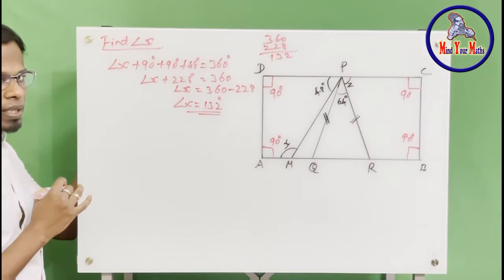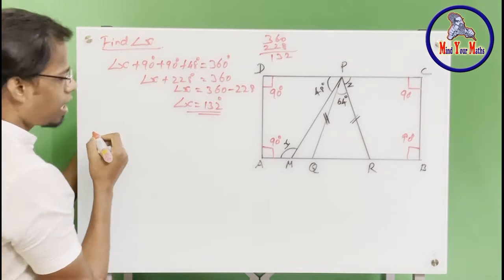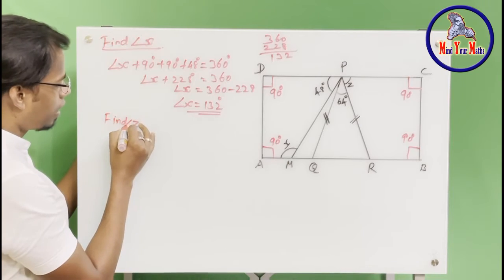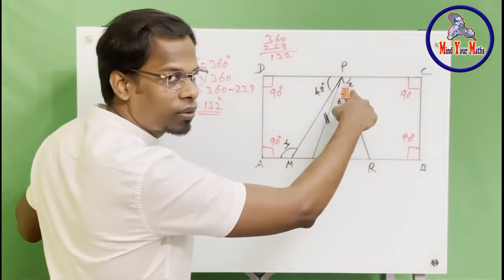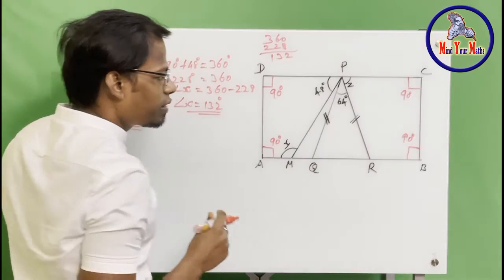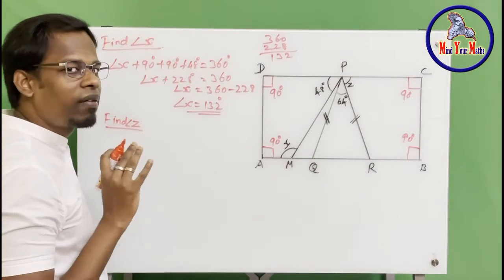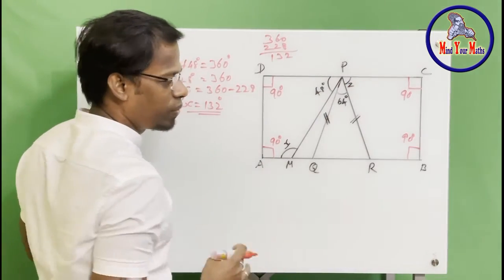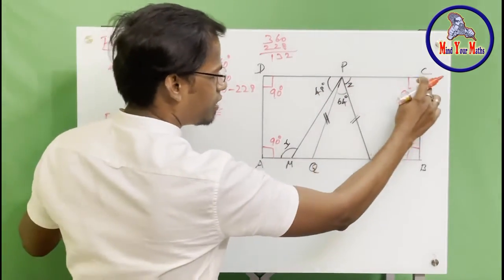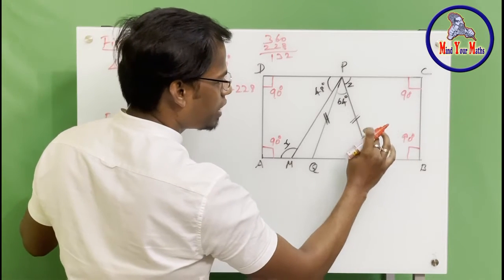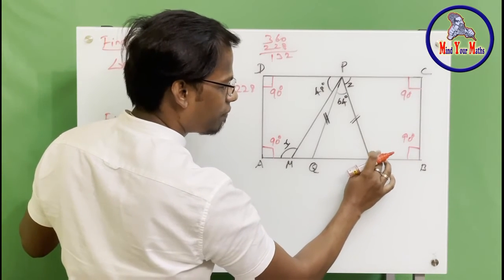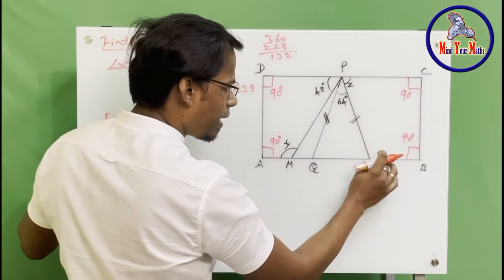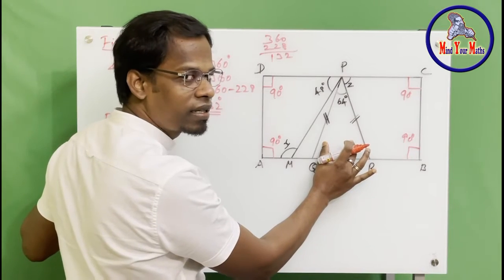Now let's find the value of angle z, which is right here. We have to think a bit outside the box because it is not very straightforward. This is a trapezium, but we're missing one angle — we don't know the value for that angle yet. So let's find it using the triangle.